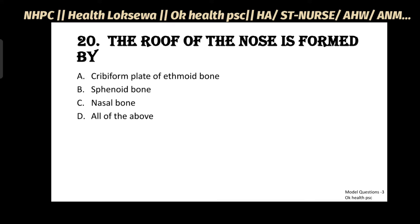Question No.20: The roof of the nose is formed by - Cribriform plate of ethmoid bone, Sphenoid bone, Nasal bone, All of the Above. Answer: D - All of the Above.